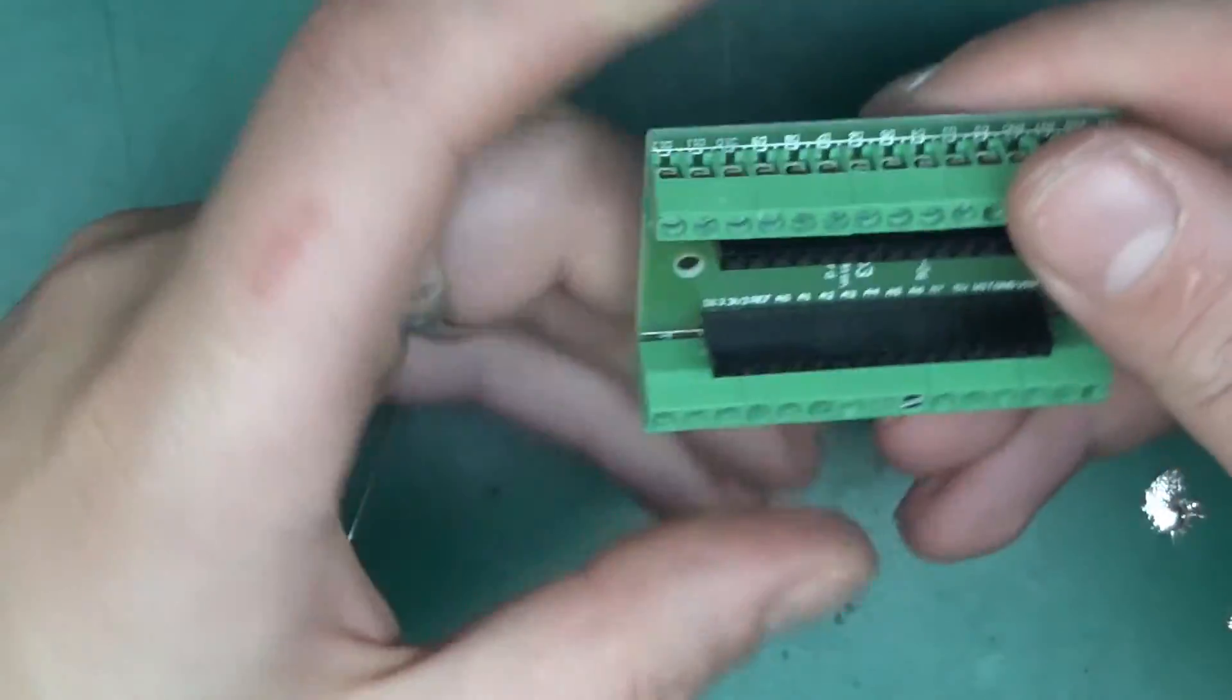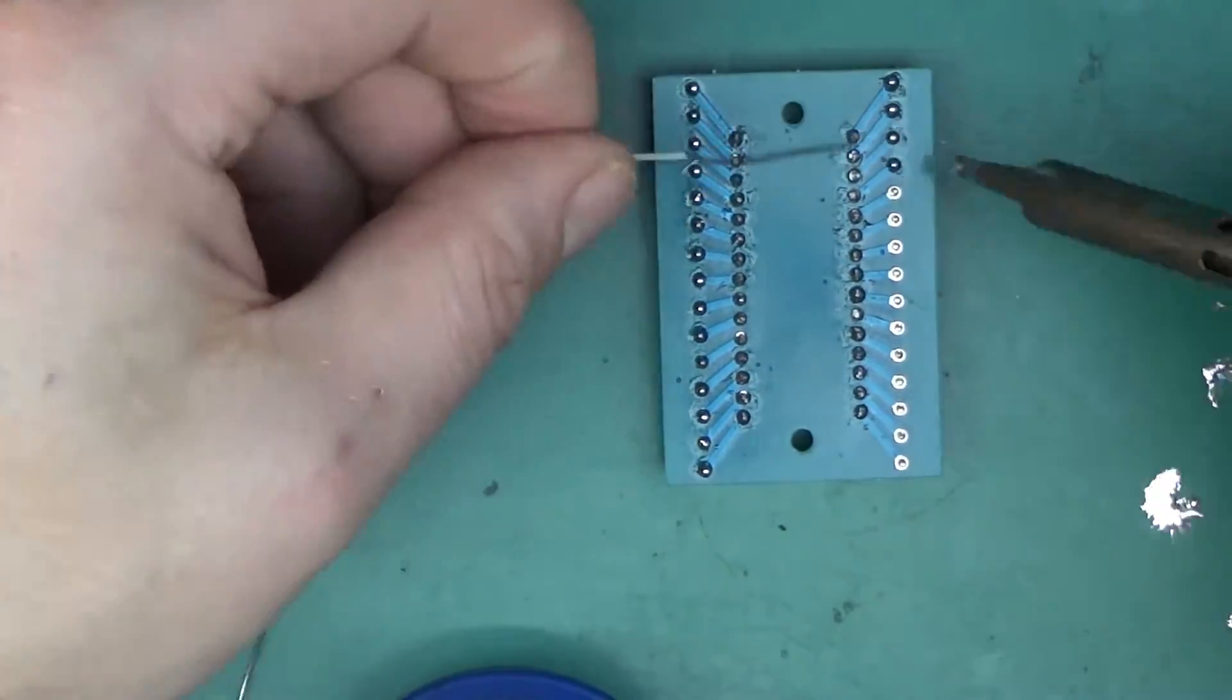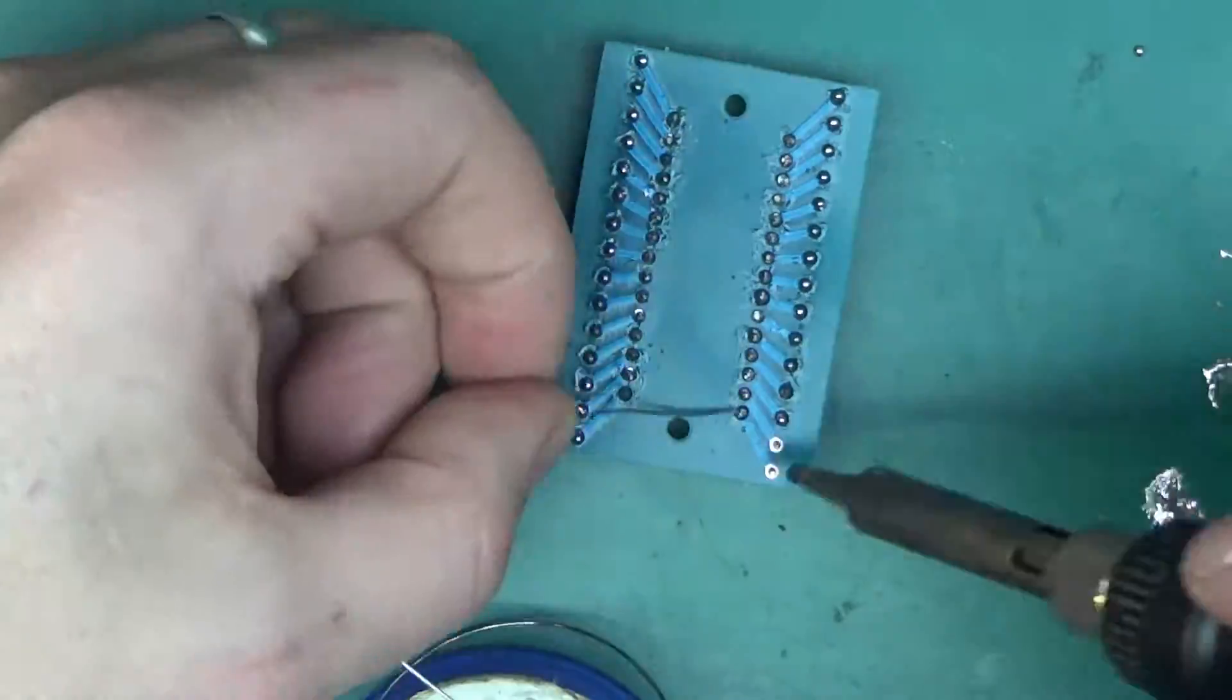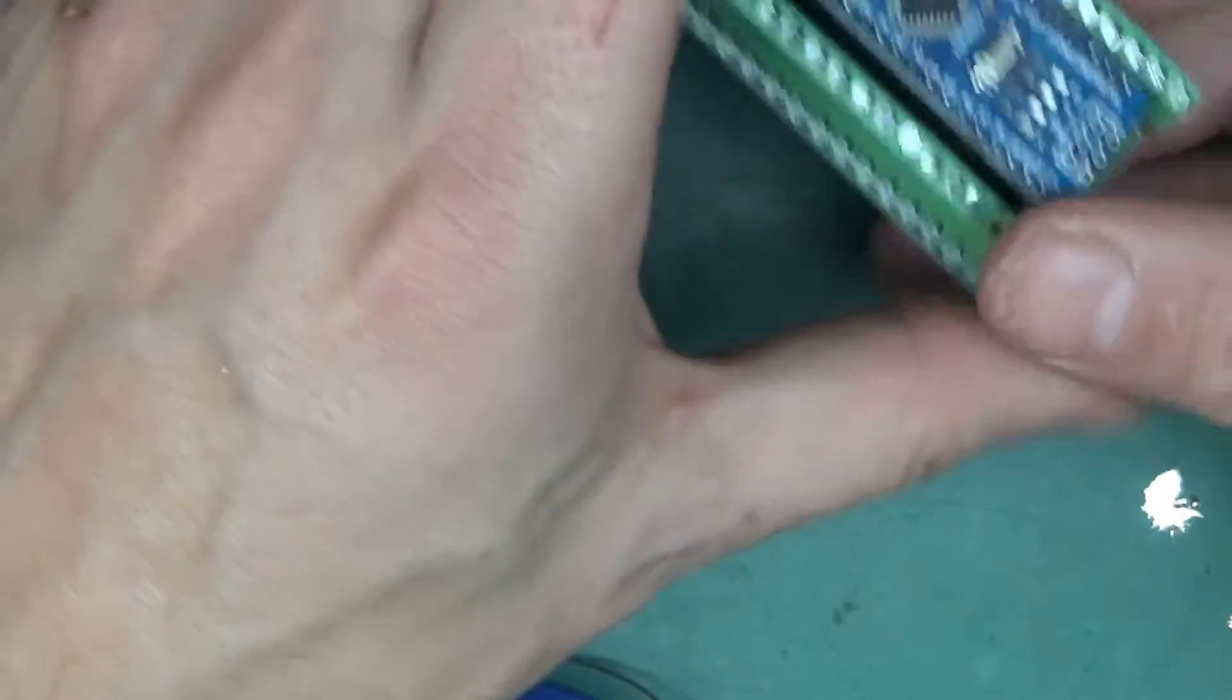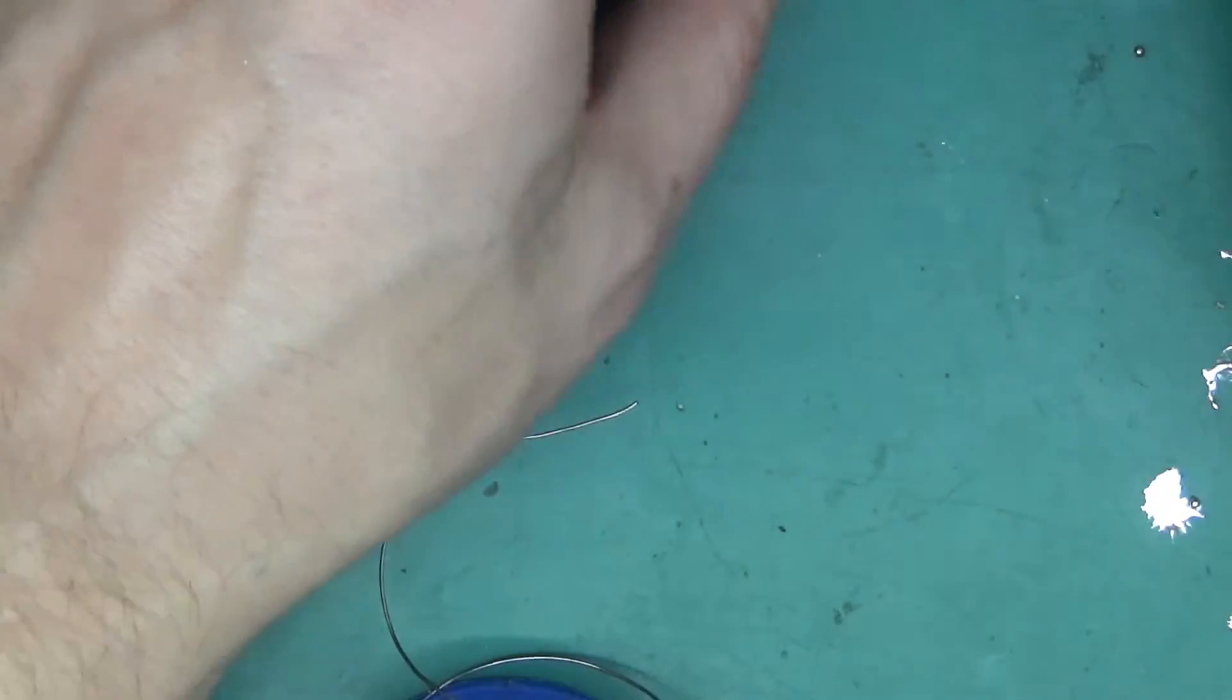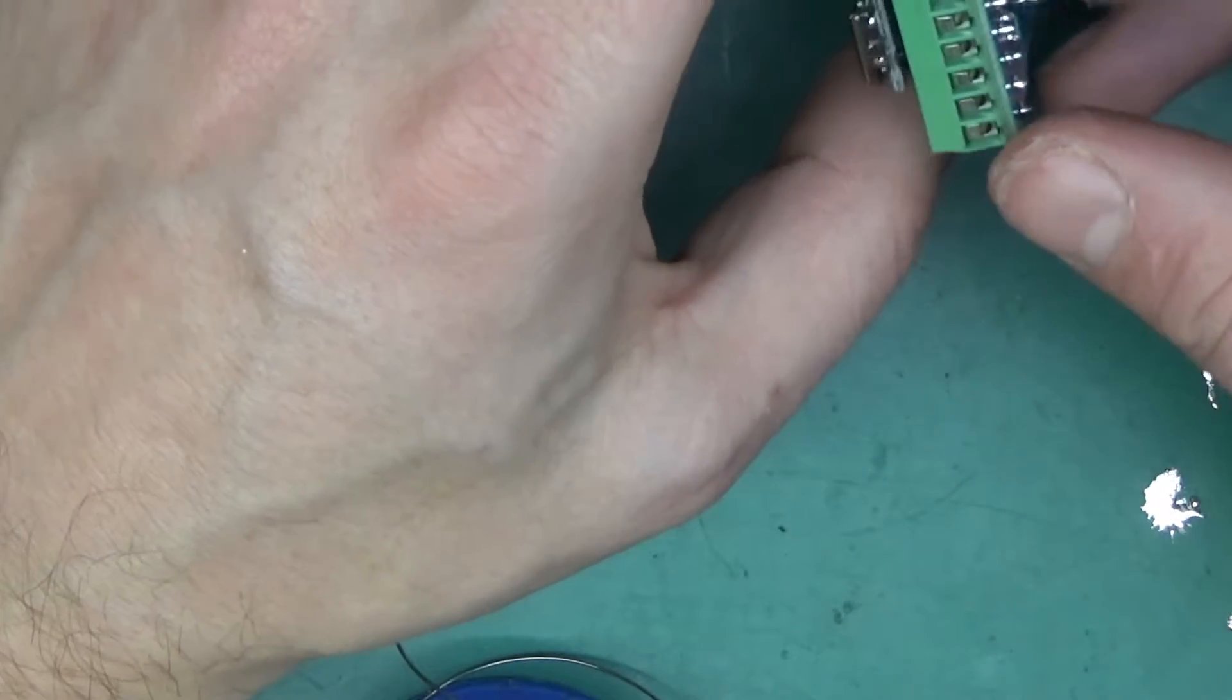But yeah, it's a little bit annoying, but okay. This is now complete. I can now take an Arduino, stick it onto this, and yeah, I've got a nice Arduino module where I can just connect the screw terminals onto this and that's really handy.